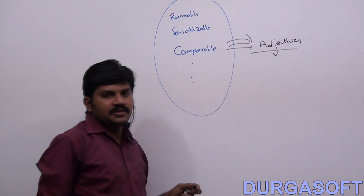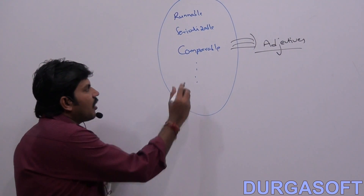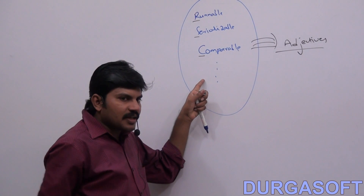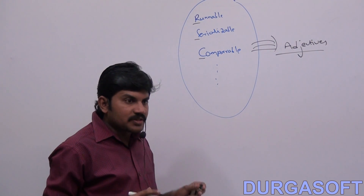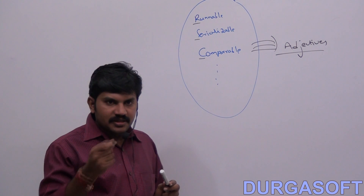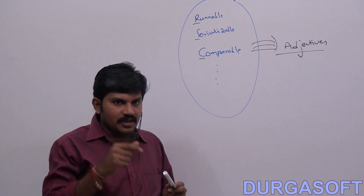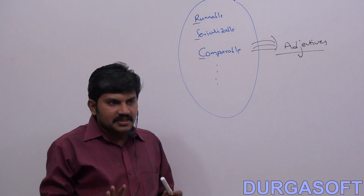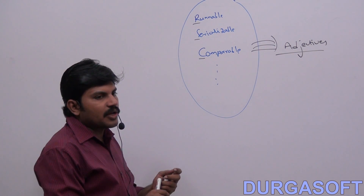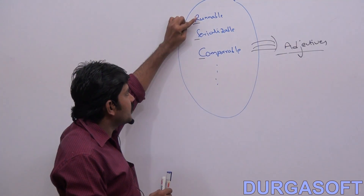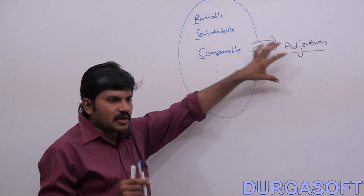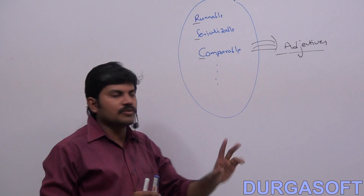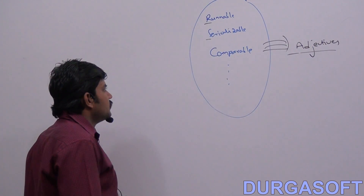Adjectives. So interface names should start with an uppercase character. If it contains multiple words — like RandomAccess — R capital, A capital — every inner word should start with an uppercase character. So usually interface names are adjectives, should start with uppercase, and every inner word should start with uppercase.